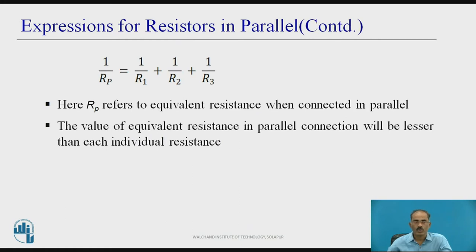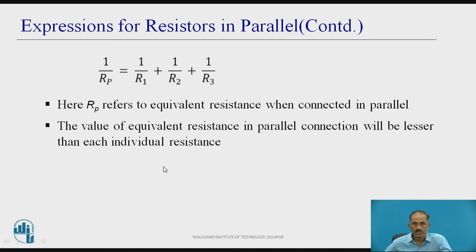Therefore, 1/Rp = 1/R1 + 1/R2 + 1/R3. Here Rp refers to the equivalent resistance when connected in parallel. The value of equivalent resistance in a parallel connection will be lesser than each individual resistance — that means the equivalent resistance when connected in parallel will always be reduced.